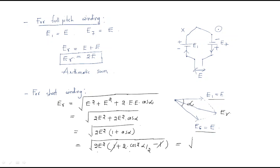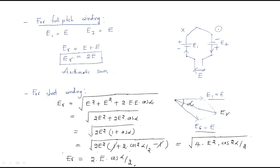After substitution we get √(2e² · 2cos²(α/2)) = √(4e²·cos²(α/2)). Taking the square root, the resultant EMF er = 2e·cos(α/2). So the final resultant EMF due to the short pitch winding is 2e·cos(α/2).